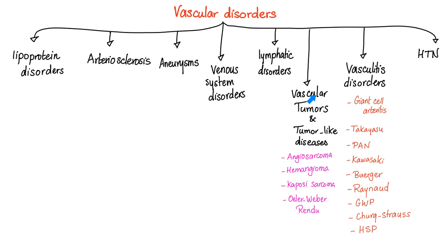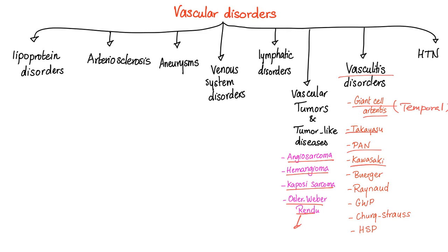Vascular tumors and tumor-like lesions include angiosarcoma, hemangioma, Kaposi sarcoma, and Osler-Weber-Rendu — hereditary hemorrhagic telangiectasia. Vasculitis includes giant cell arteritis, also known as temporal arteritis — we have talked about this in a previous video — Takayasu, polyarteritis nodosa, Kawasaki, and Buerger's disease.